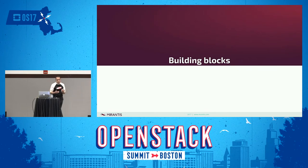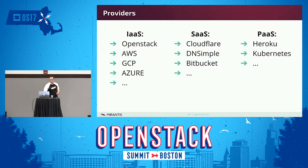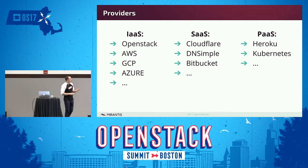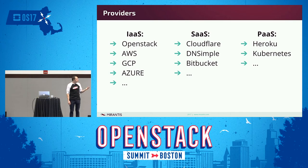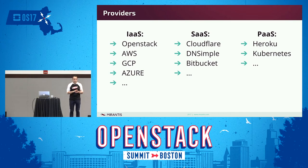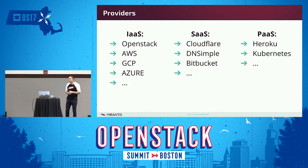So what building blocks does Terraform have? The first is providers. Terraform is vendor agnostic, which means you can use an endless number of providers — things like AWS, Google Cloud, Kubernetes, Bitbucket, etc. You can manage your multi-cloud, multi-environment application through a single tool, even from a single repo.